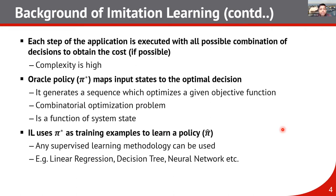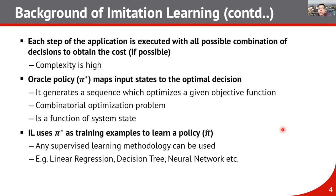Each step of the application is executed with all possible combinations of decisions to obtain the cost. At each time step we run our application with all possible decisions and at the end we get the performance metric — it can be energy, latency, or energy efficiency. If we run this exhaustive search the complexity is very high, so the oracle policy maps this input state to the optimal decision and generates a sequence which optimizes a given objective function.